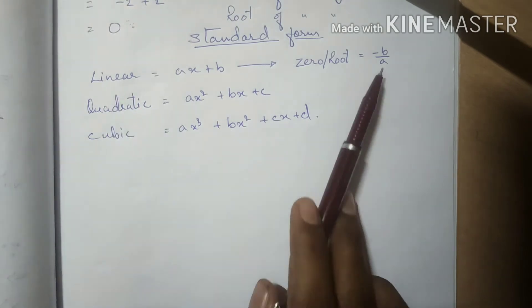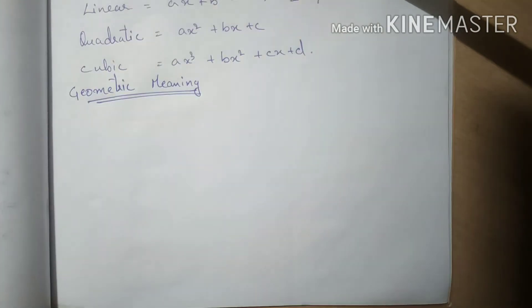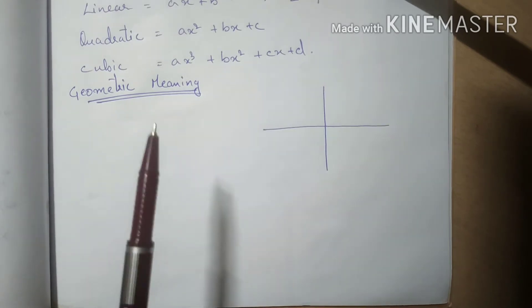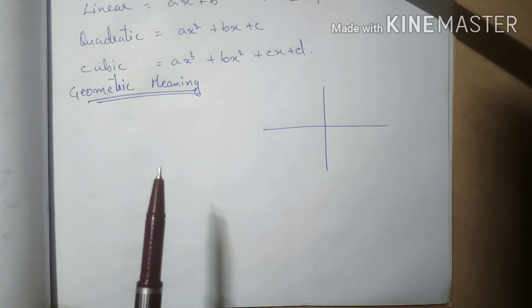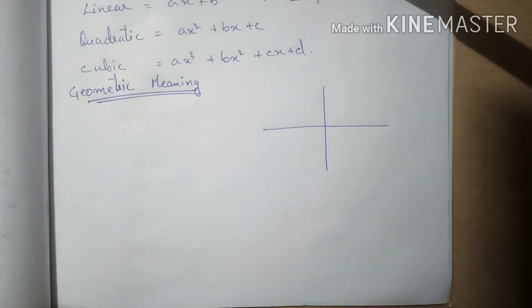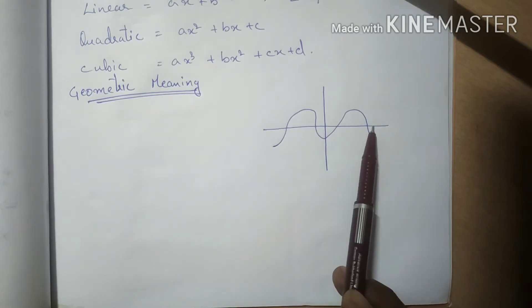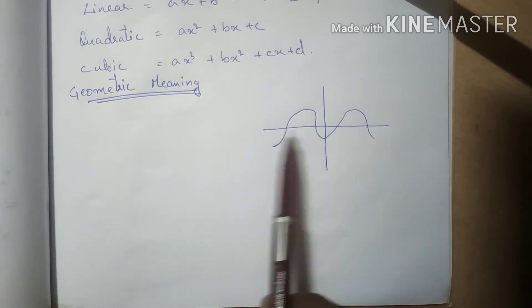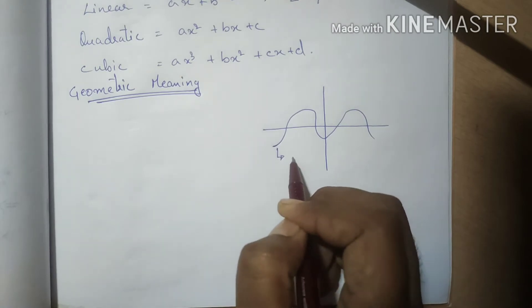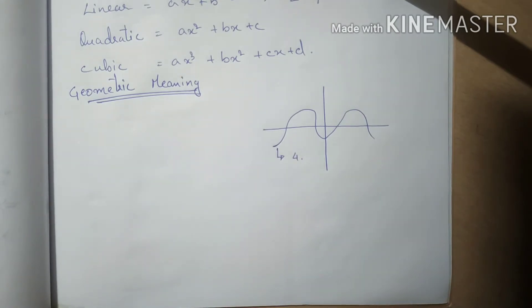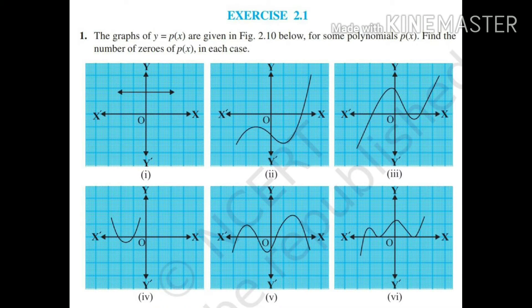These are the standard forms of linear, quadratic, and cubic polynomials. The zero of a linear polynomial is minus b by a. Moving to the geometrical meaning of the roots of a polynomial: it is defined by how many times the graph of the equation cuts the x-axis. For example, one graph has 4 points cutting the x-axis, so it has four zeros.